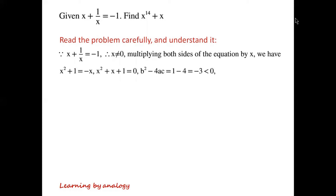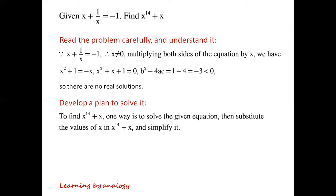So, the discriminant b squared minus 4ac equals 1 minus 4 equals minus 3, which is less than 0. So there are no real solutions. In this case, to find x to the power of 14 plus x, we need another approach.